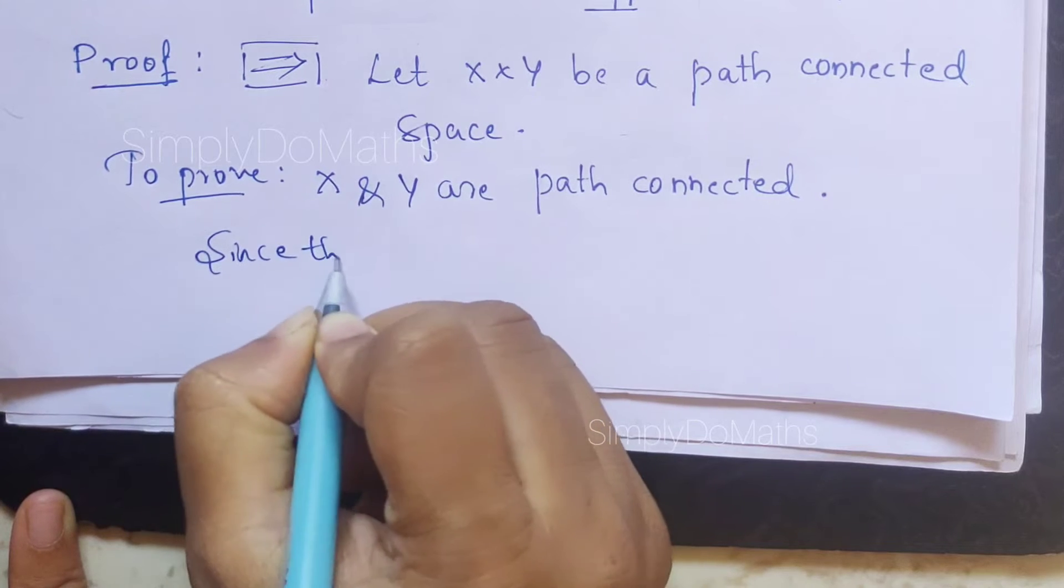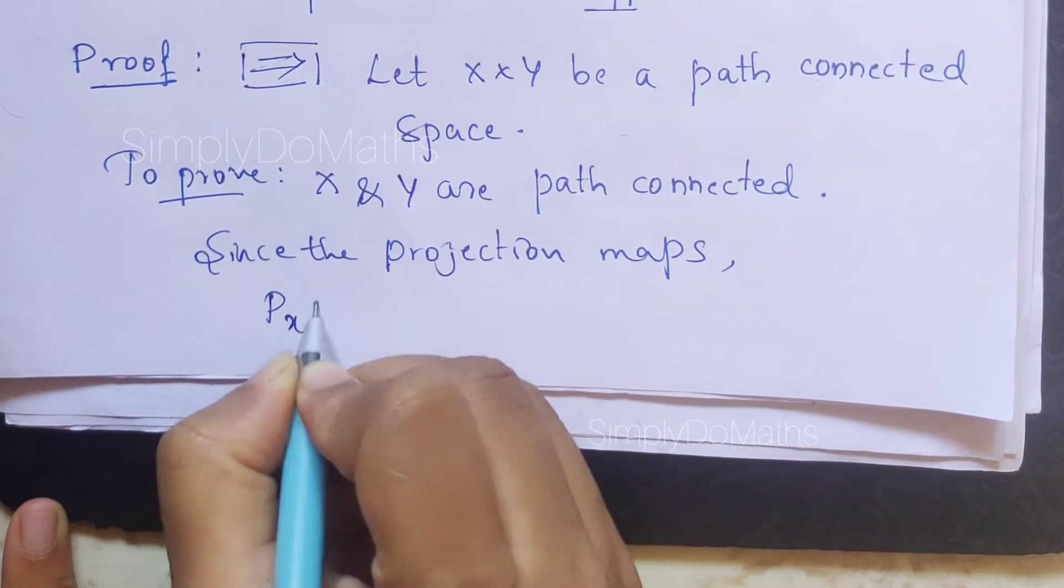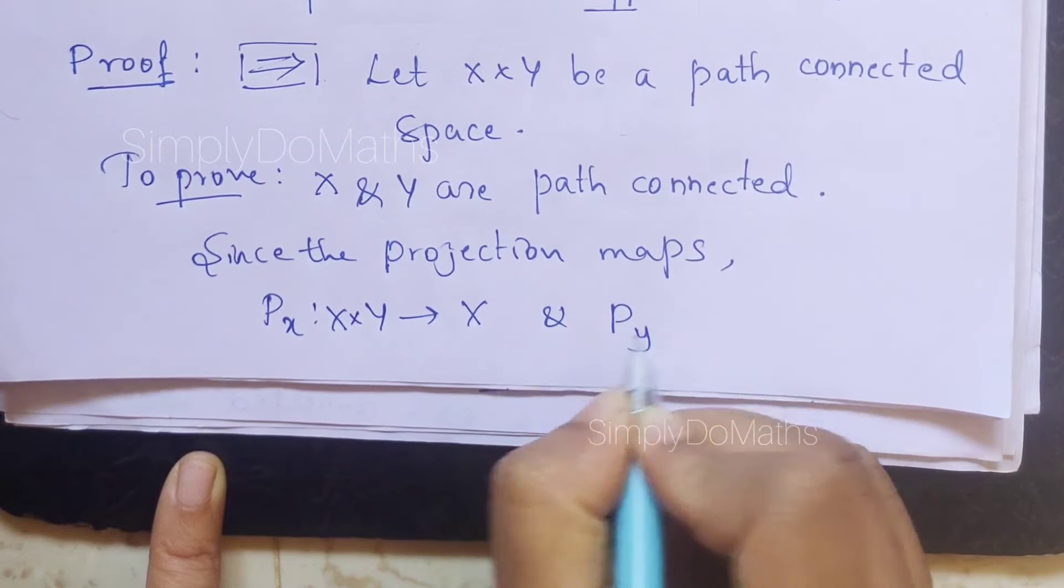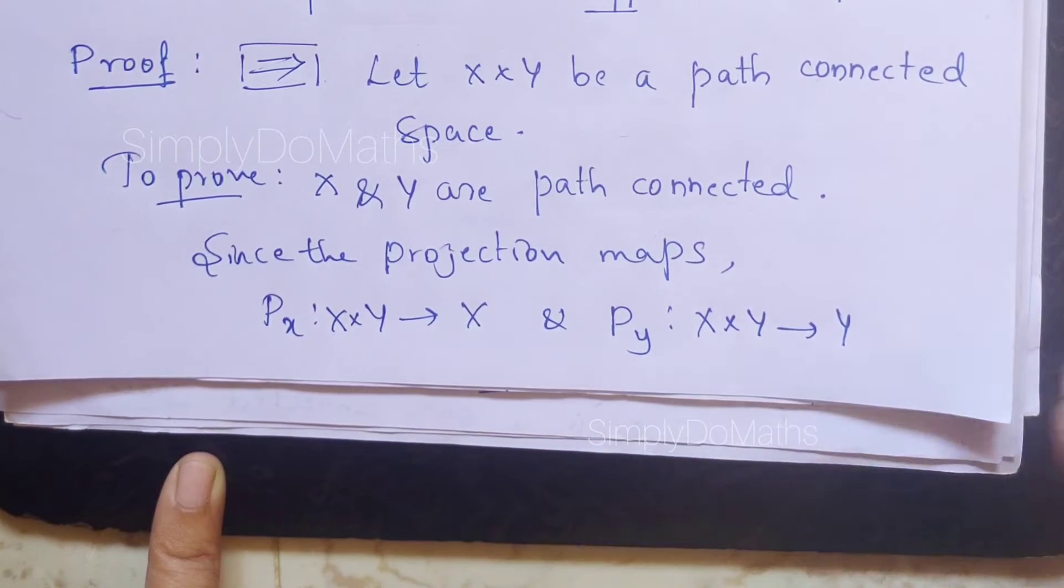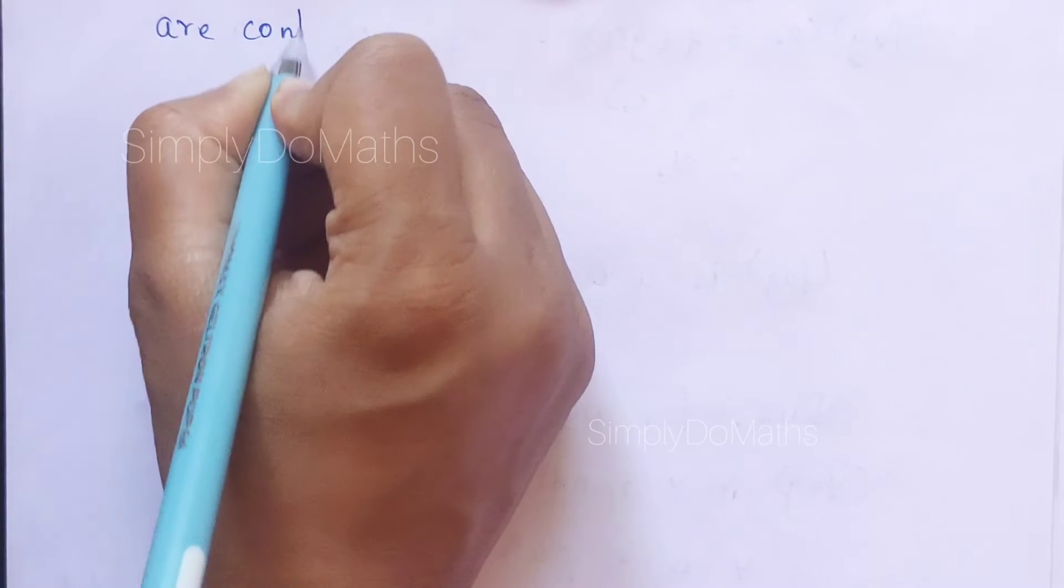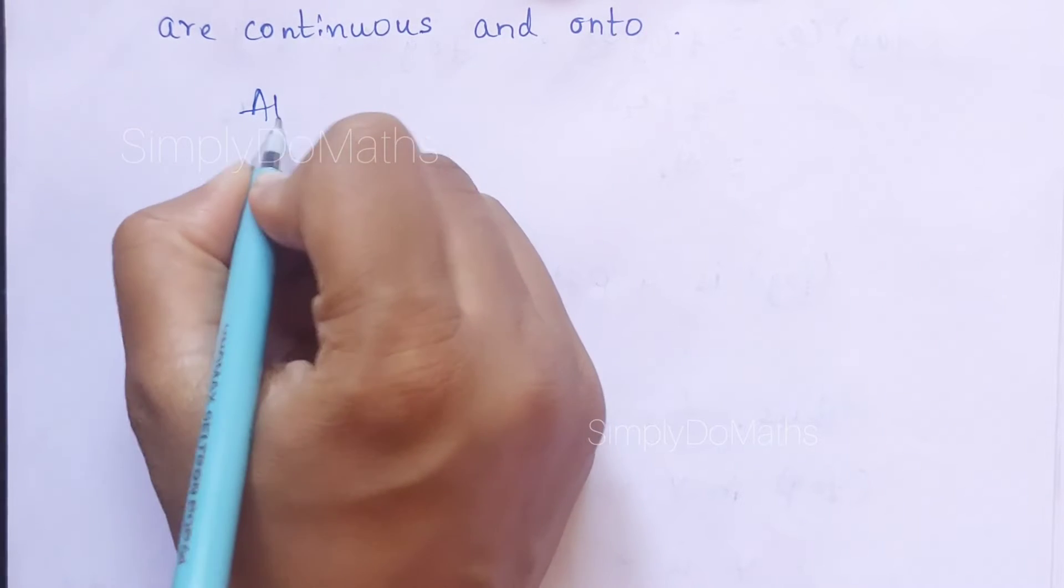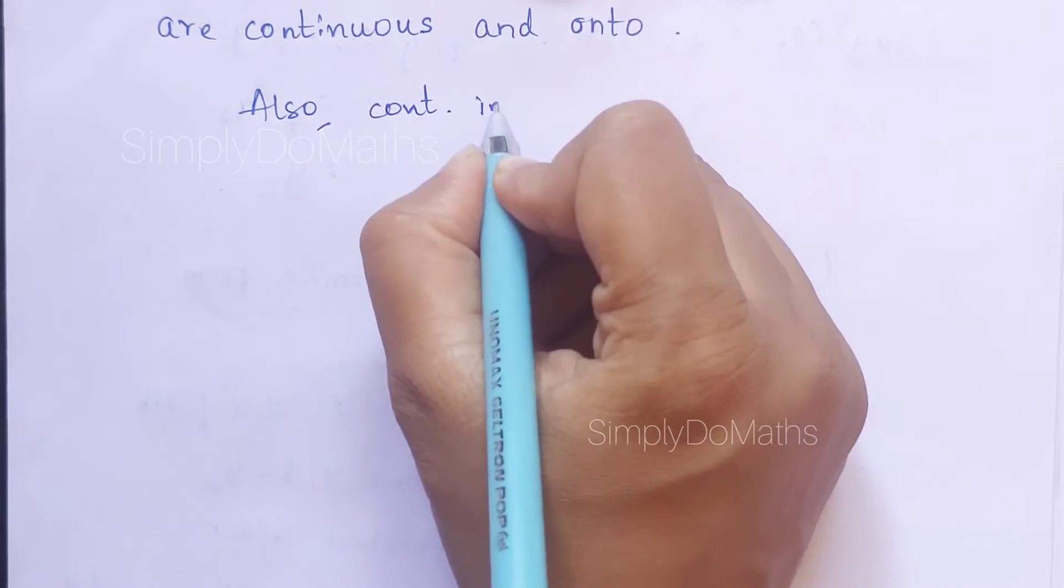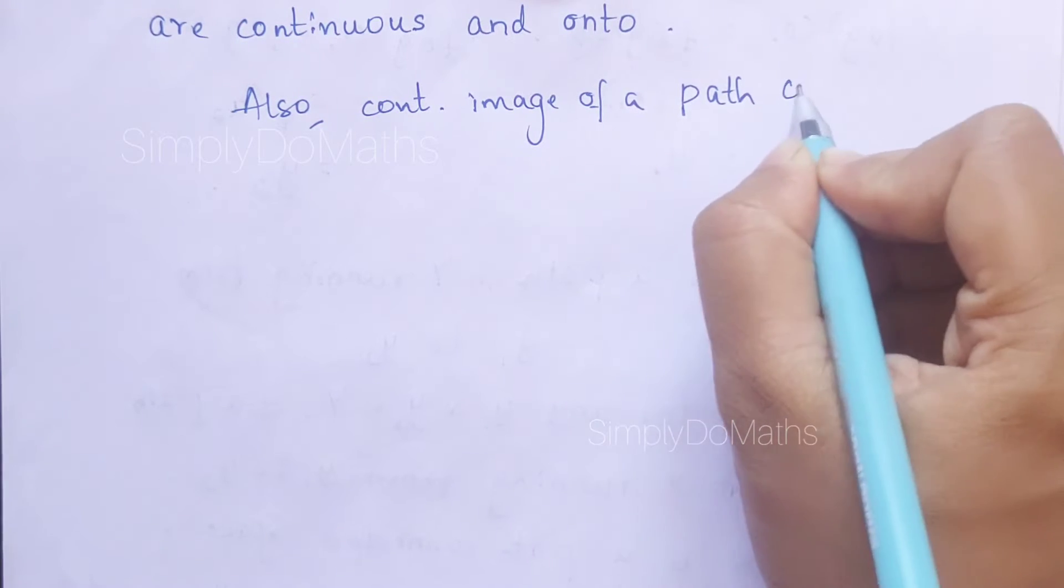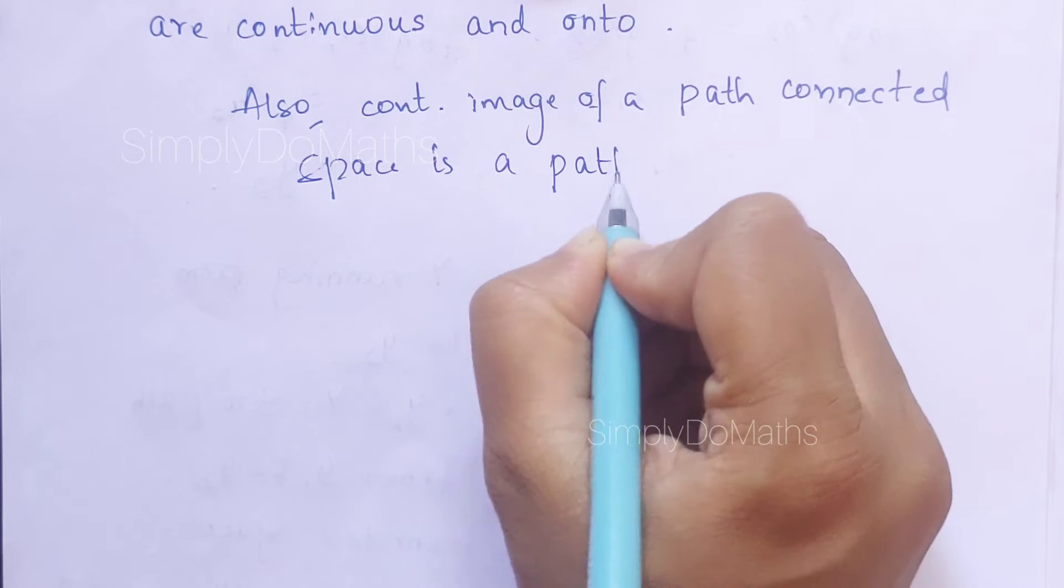Since the projection maps Px from X×Y to capital X and Py from X×Y to capital Y, as you know, these projection maps are always continuous and onto. Also, continuous image of a path-connected space is a path-connected space, which we proved in our last video.